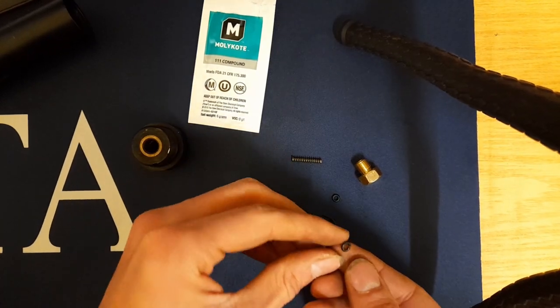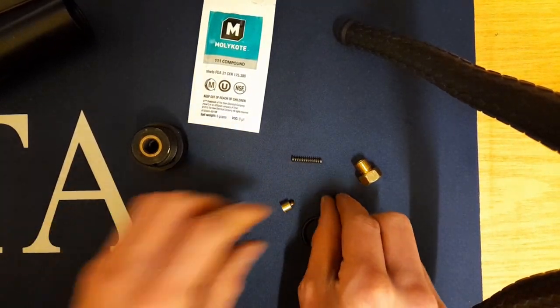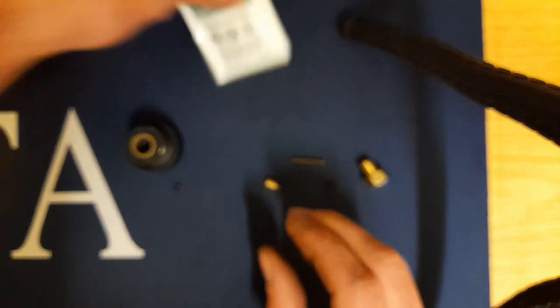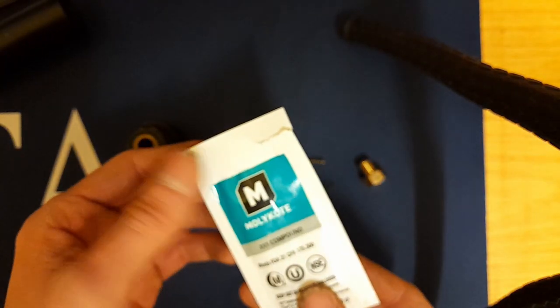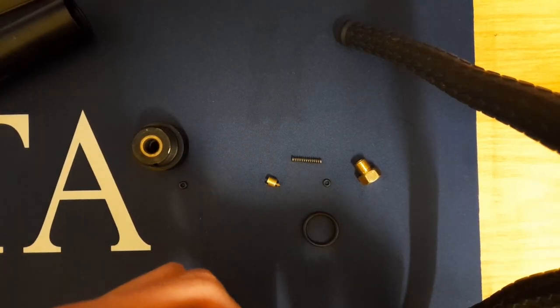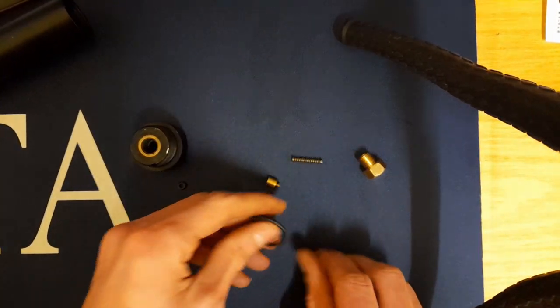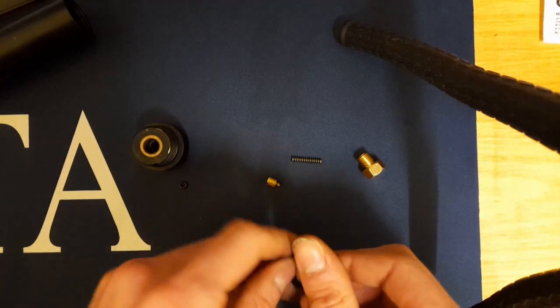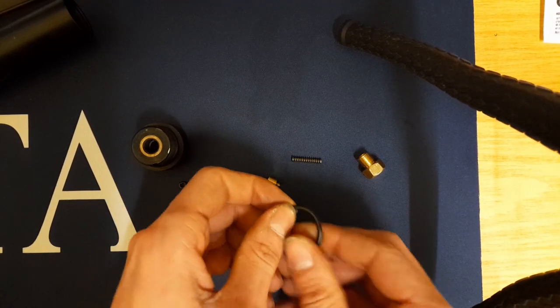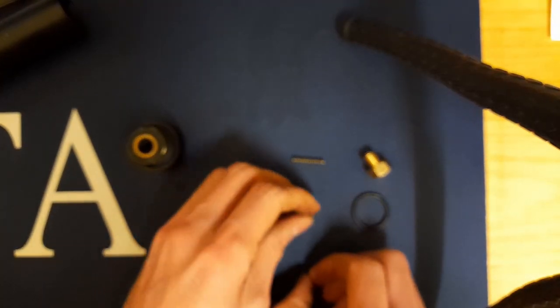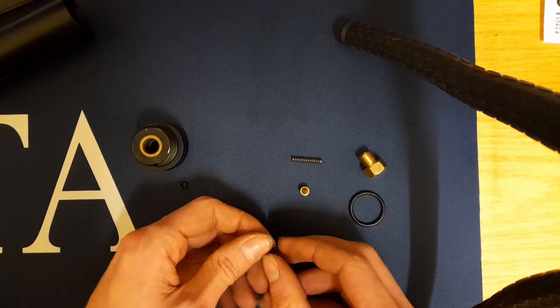There we go, so the old one gone. New one - I'm just going to put a tiny little bit of this molly coat on beforehand, just a tiny bit on your fingers, and again just a tiny bit on the one that's going to go around the body.